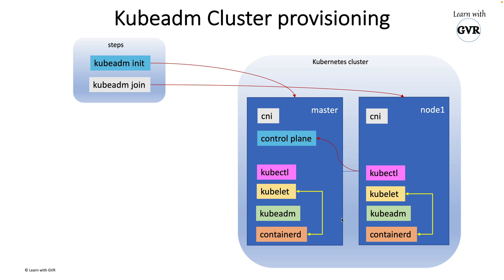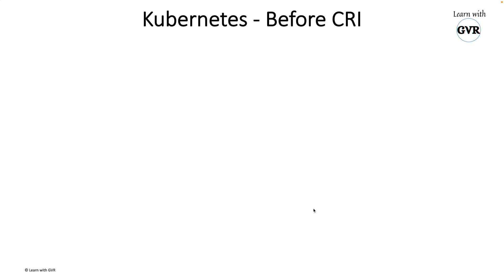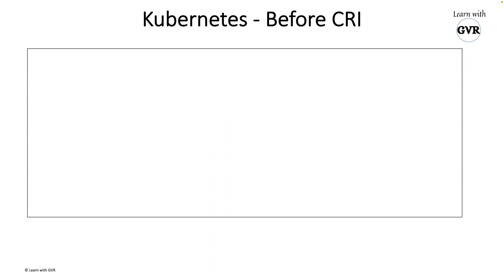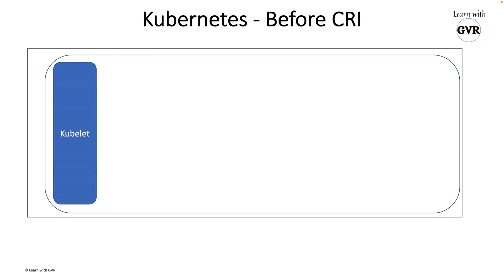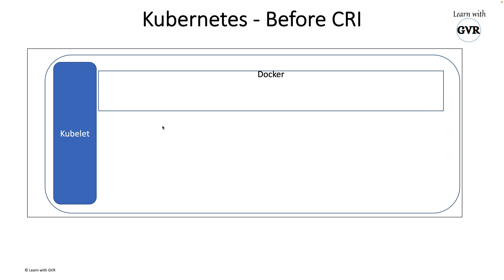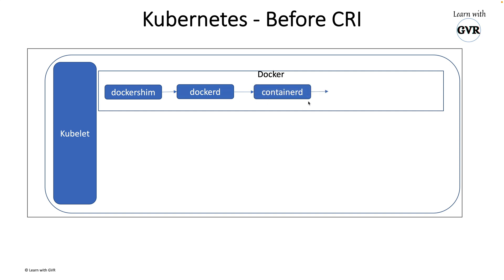Before CRI, let's understand how things worked and why CRI was introduced. Before CRI, in a Linux system, kubelet had inbuilt code for Docker — because long back, Docker was the only container runtime. Kubelet integrated the dockershim code, which is a kind of API or functionality hardcoded as part of kubelet. That shim would call the Docker daemon, and the Docker daemon would internally call containerd, and containerd would invoke runc to finally create the container as a pod.